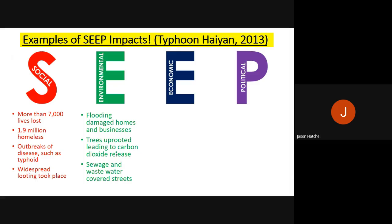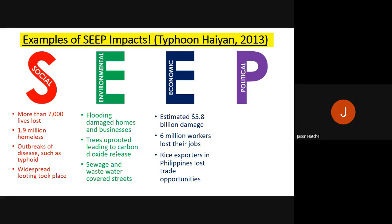The economic impacts of Typhoon Haiyan in the Philippines include an estimated $5.8 billion US dollars worth of damage — a huge figure. Six million workers lost their jobs and their source of income; agricultural workers and farmers lost crops and use of their land. A third economic impact is that one of the main exports of the Philippines is rice, so rice exporters lost trade opportunities and their income fell significantly as a result.